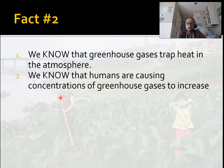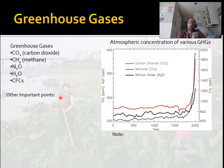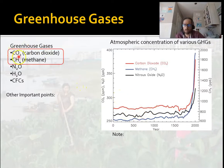That's the basics of the greenhouse effect — important science that's really not too complicated. Fact number two: we know that humans are causing concentrations of greenhouse gases to increase, and we know that the number one source of emissions is energy use. There are a bunch of greenhouse gases; the main ones are carbon dioxide (CO2) and methane (CH4). This chart shows methane in blue and carbon dioxide in red, tracking concentration over about 2,000 years.